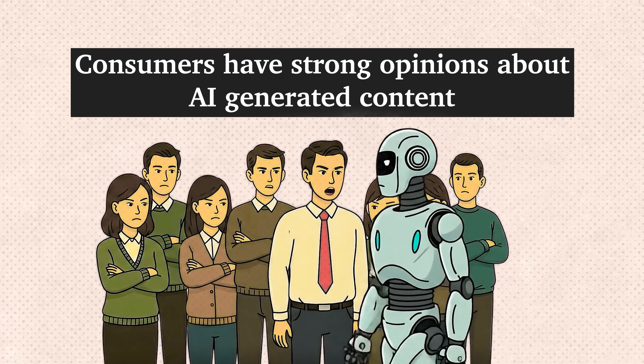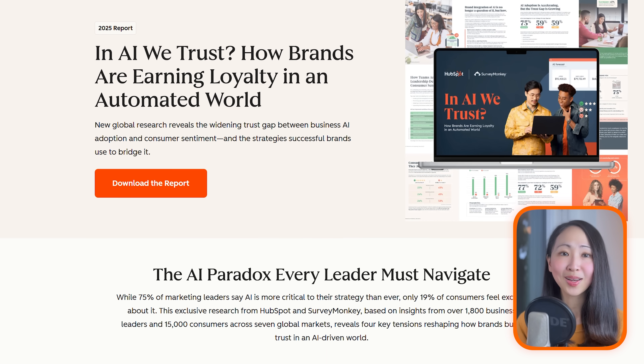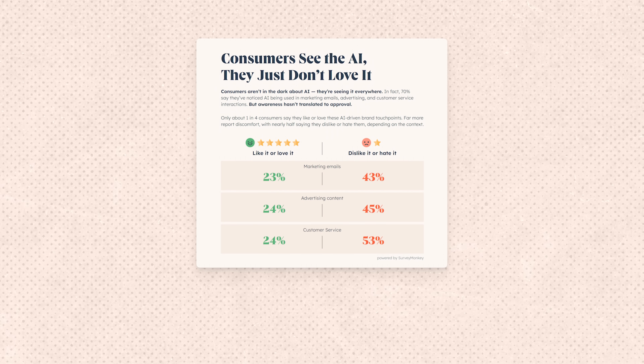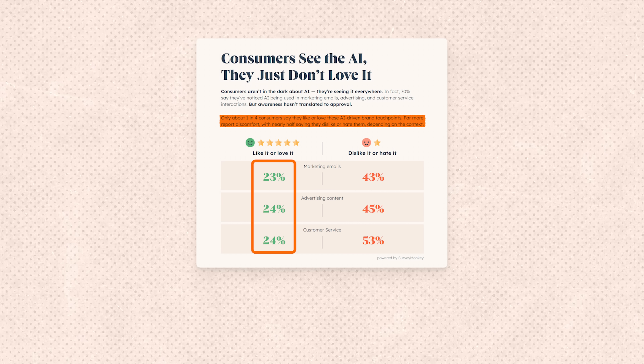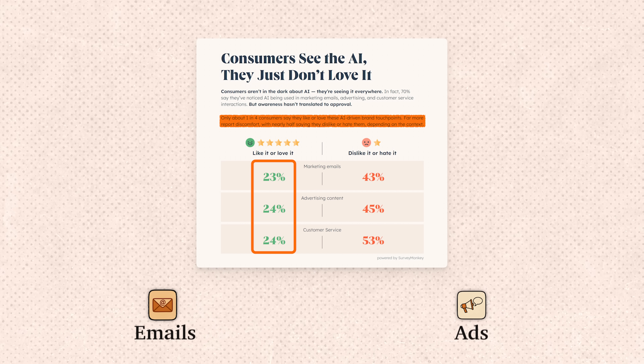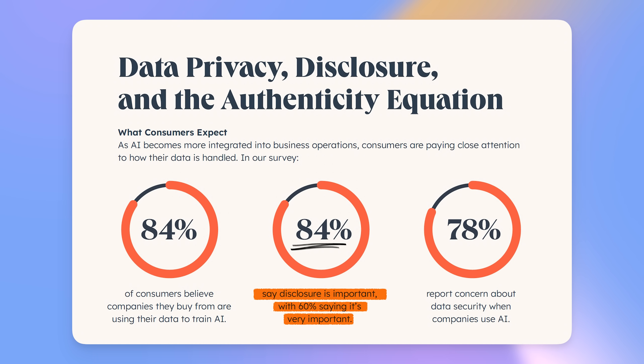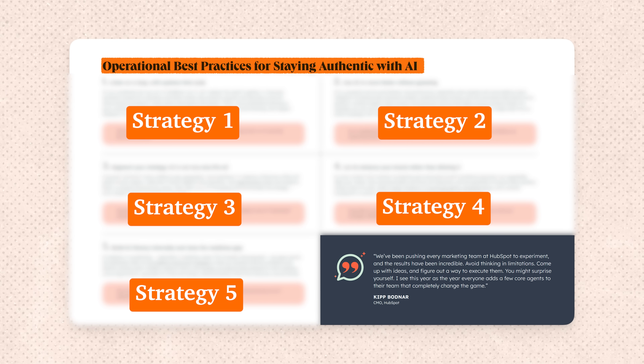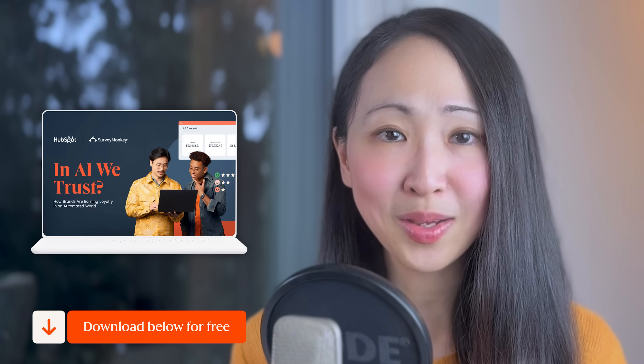Now that you've seen how easy it is to build content agents with AI, here is the catch: consumers have strong opinions about AI-generated content. If you want to understand what they actually think and how to implement AI without losing their trust, this free report from HubSpot and SurveyMonkey — 'How Brands Are Earning Loyalty in an Automated World' — covers exactly that. Based on data from over 15,000 consumers globally, only 24% of consumers actually detect AI in their emails, ads, or customer support, and 84% want to know when brands are using AI. That is a trust gap you need to close. Download it for free in the description.